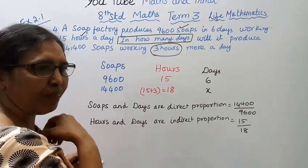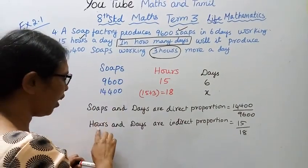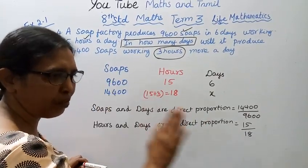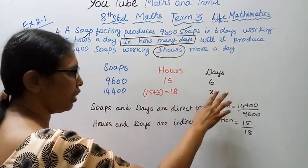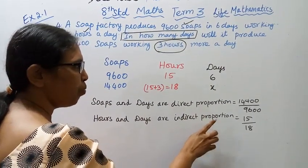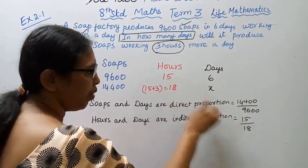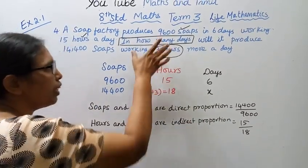Soaps and days are direct proportion. Hours and days are indirect proportion. So we set up the equation with 14400 over 9600, and 15 by 18.